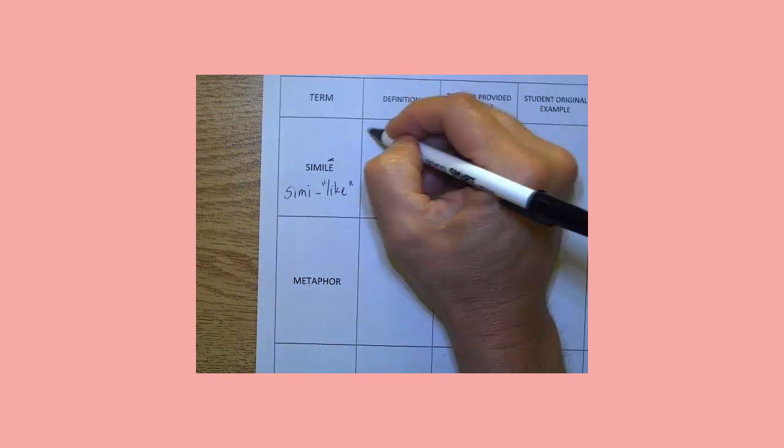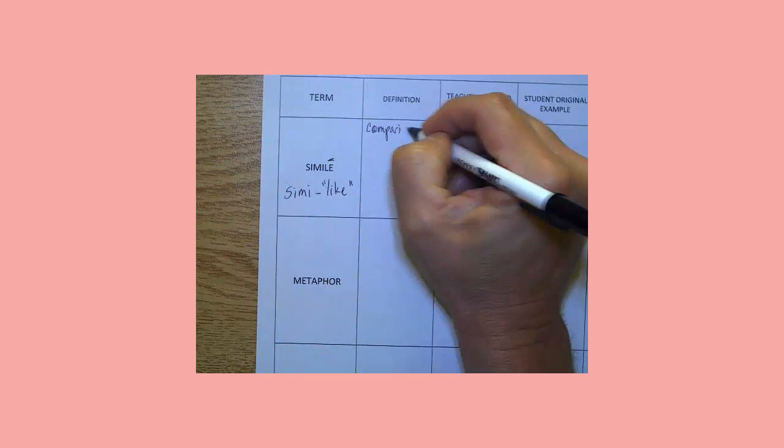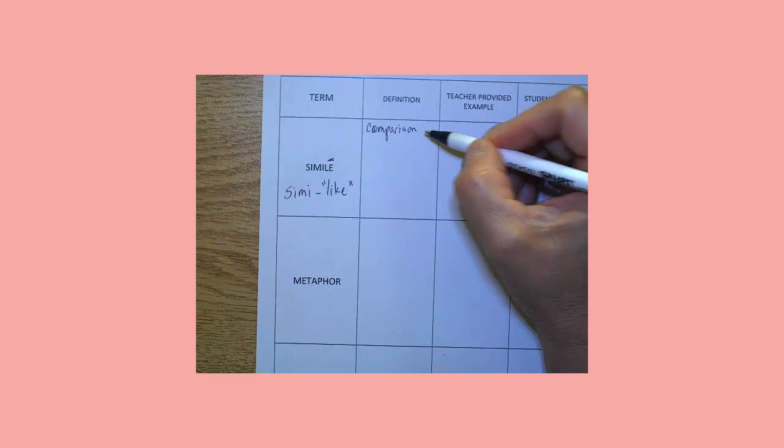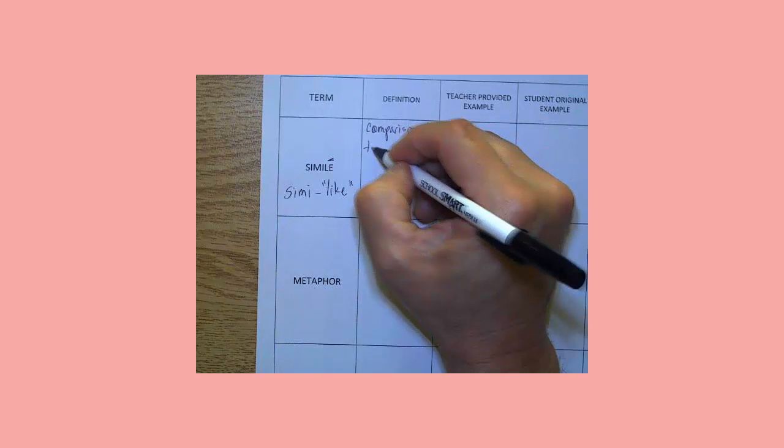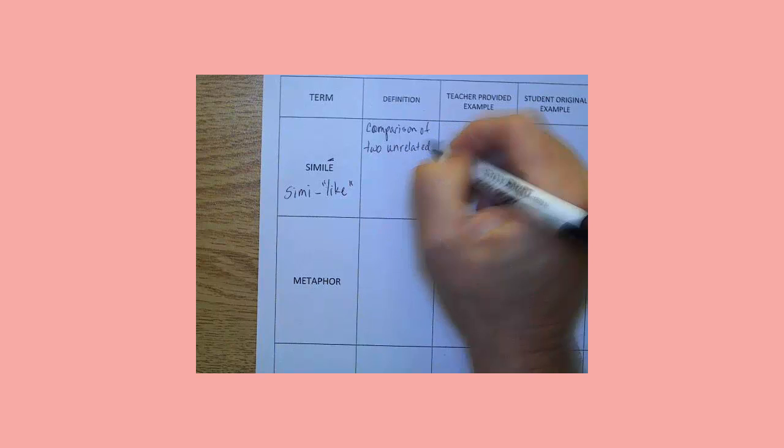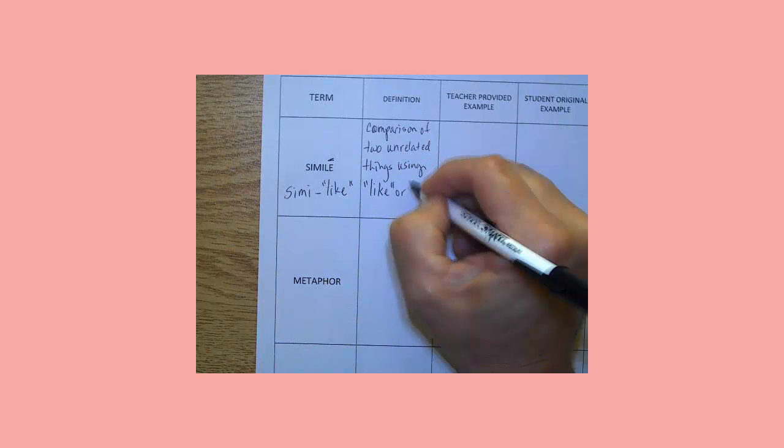The definition of a simile is a comparison. Everything I'm writing on the screen, you can copy on your paper. Notice how big my writing is. It's not big giant letters. I kind of wrote small. Your hand might get sore, but hang with me. It's a comparison of two unrelated things using, quote, like or as.